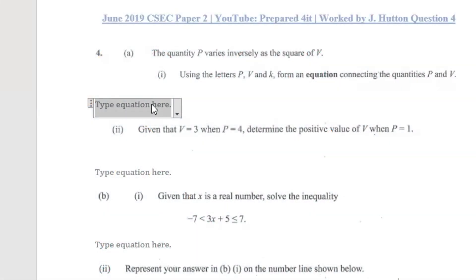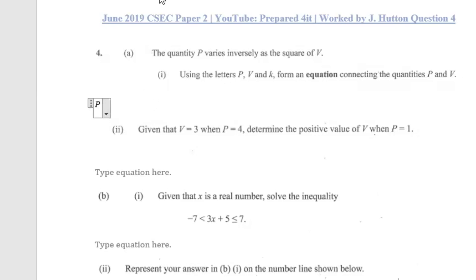Hello everyone and welcome back to another video. Today we'll be working question four from the June 2019 paper. It says the quantity p varies inversely as the square of v. Using the letters p, v and k, form an equation connecting the quantities p and v.